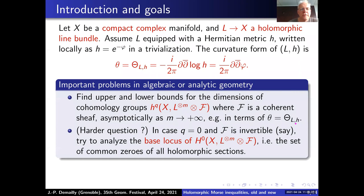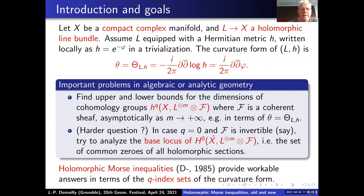A harder question, especially when you look at q equals zero — namely holomorphic sections — and suppose F is itself an invertible sheaf: you would like to analyze the base locus of those holomorphic sections, namely the set of common zeros of all holomorphic sections globally on X. Holomorphic Morse inequalities precisely give some answers in terms of the q-index sets of the curvature form. It's an old work of mine from 1985.